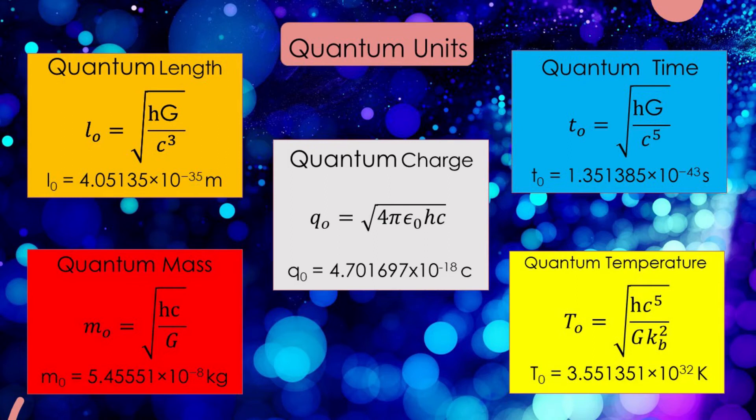Quantum length, quantum time, quantum mass, quantum charge, and quantum temperature. The advantage of these units is that all of the important physical constants are equal to 1, effectively getting rid of them.